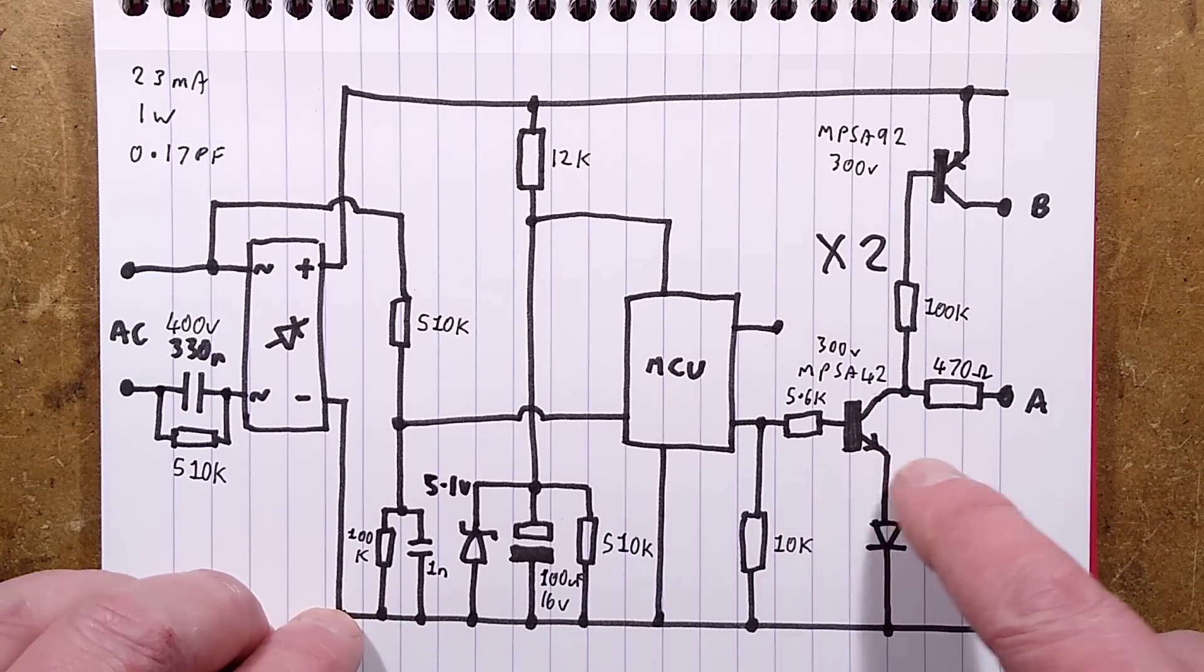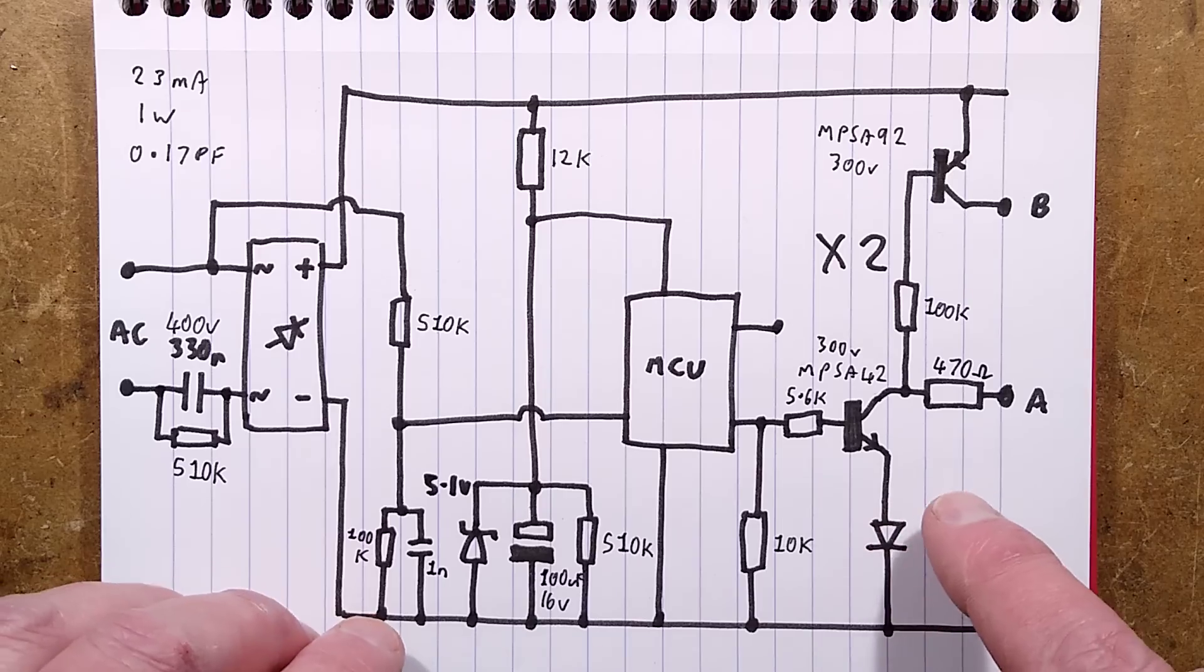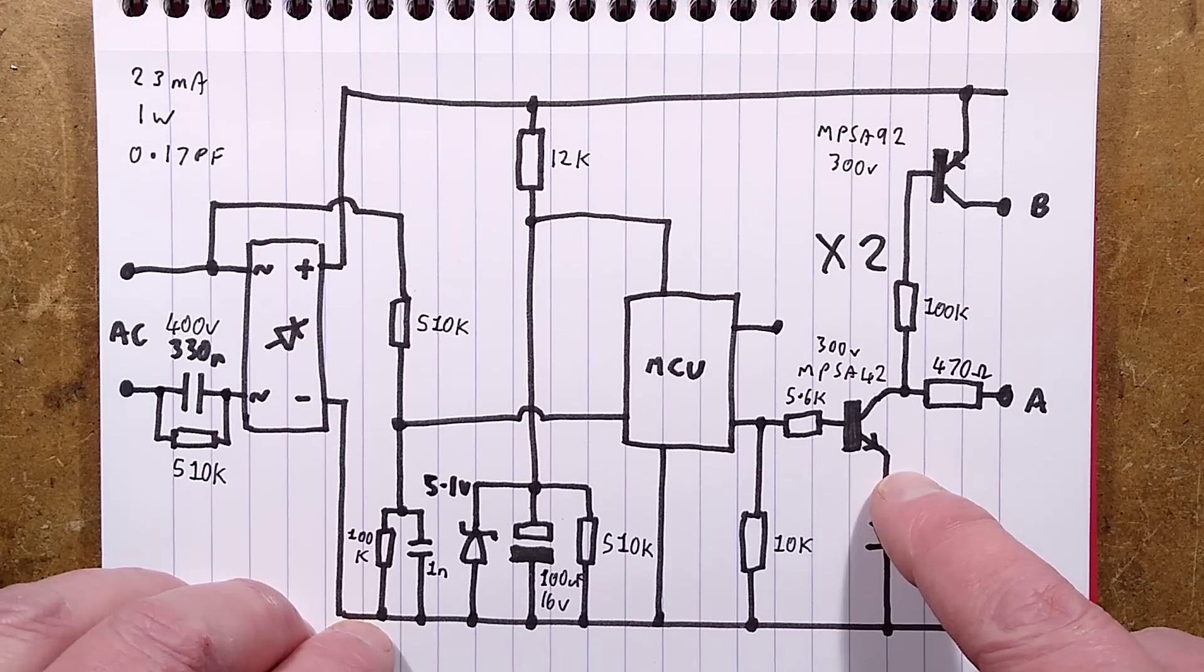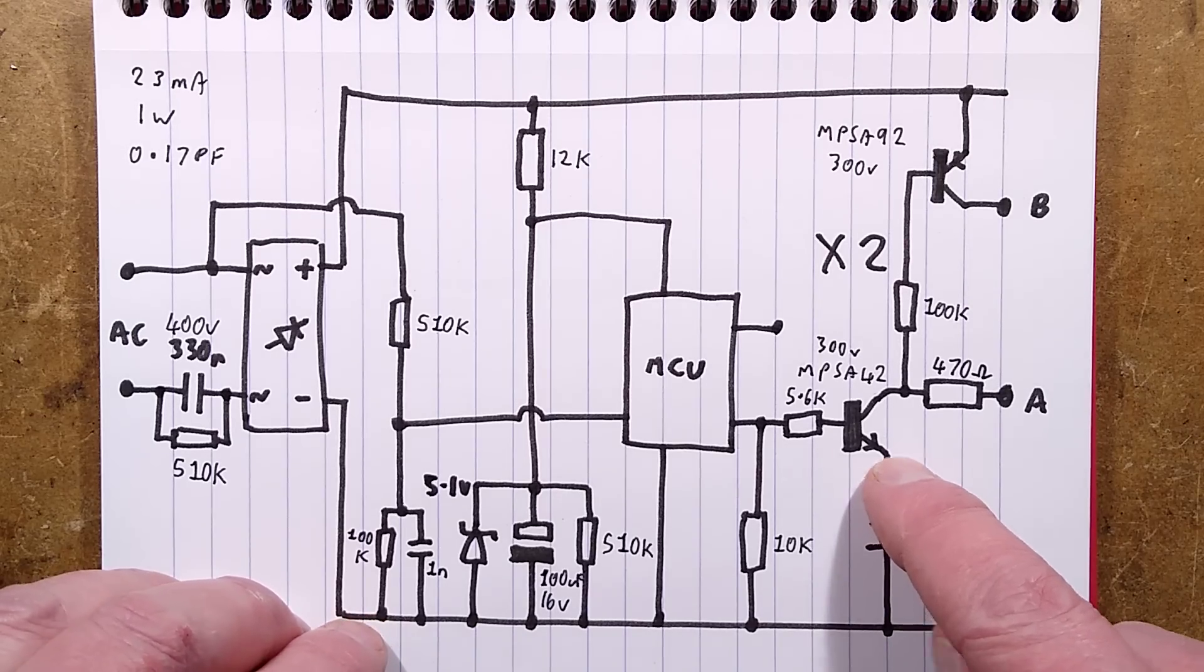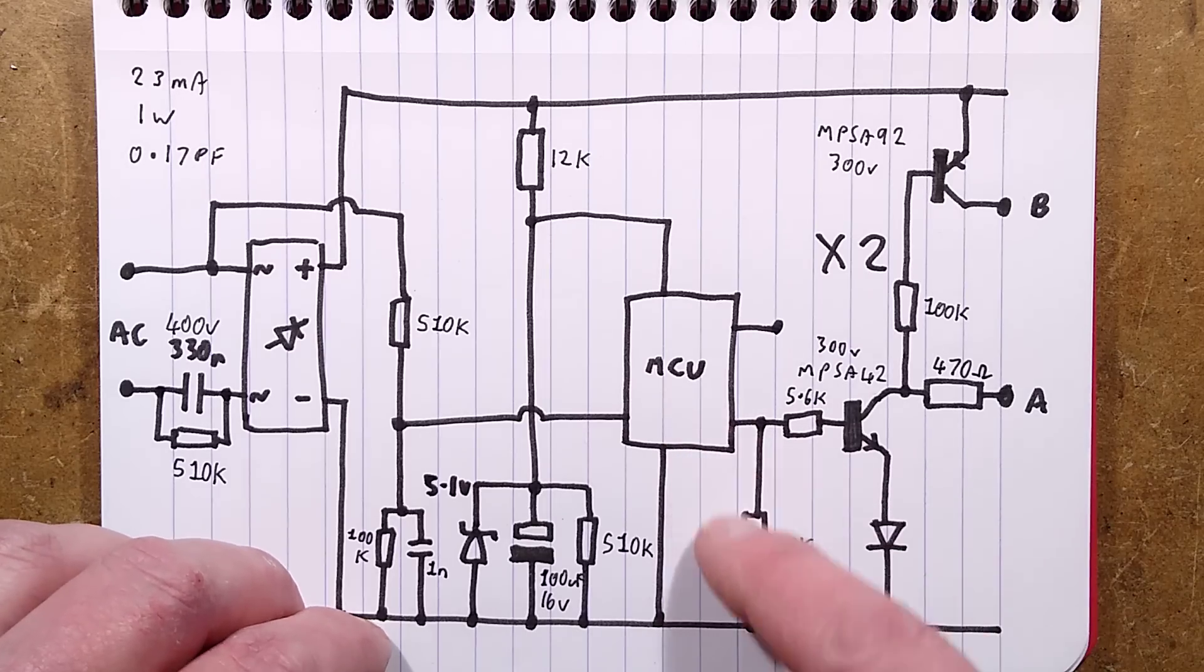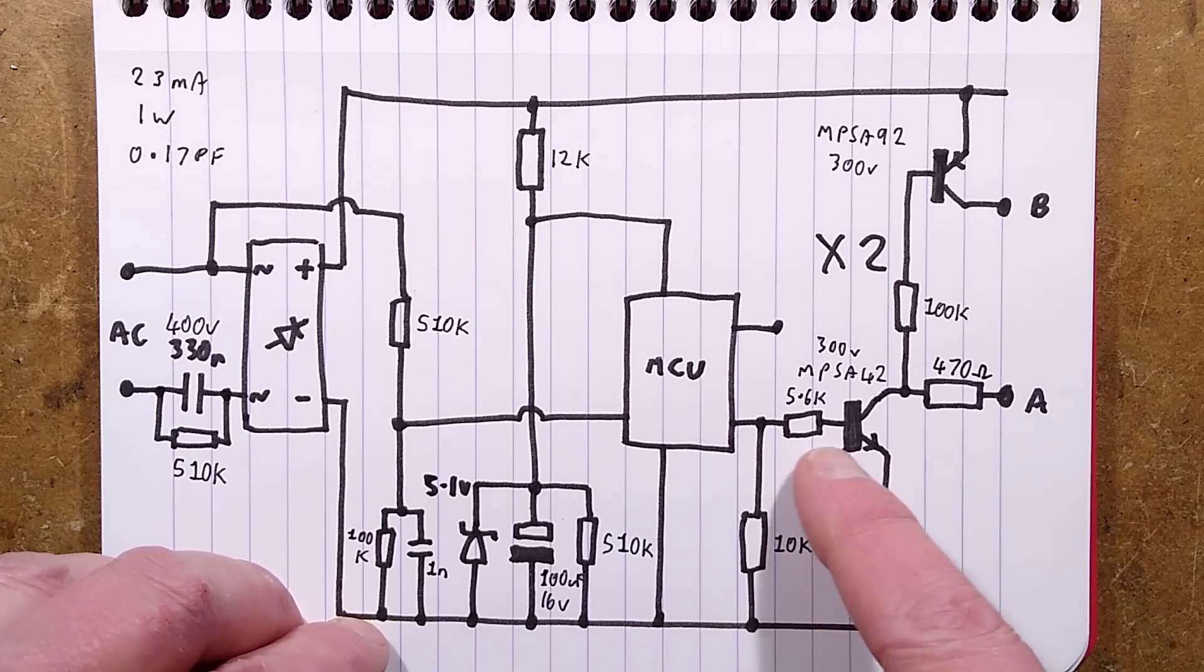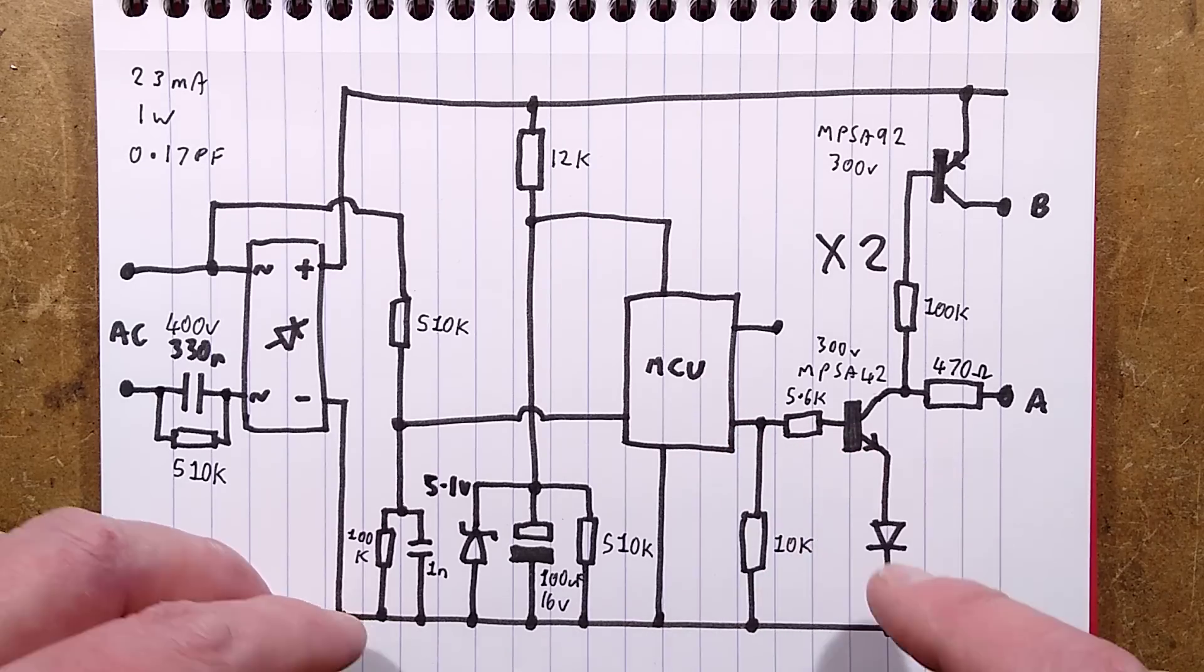It's common to both the NPN transistors, the one in this channel and the one in that channel. And it just lifts the emitter voltage a little bit to make sure that if the microcontroller can't effectively pull it right down to the zero volt rail, it makes sure that there's no risk it's going to leave it sort of slightly on when it's supposed to be off.